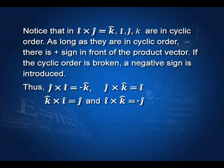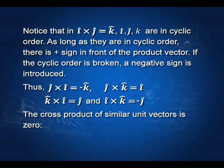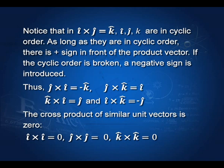Remember: if I, J, and K are in the cyclic order I, J, K or J, K, I or K, I, J, the sign of the cross product is positive. If this order is broken, the sign is negative — so J cross I is minus K. Also, i-cap cross i-cap equals 0 because the angle between them is 0 and sine of 0 is 0. Similarly, j-cap cross j-cap equals 0 and k-cap cross k-cap equals 0.